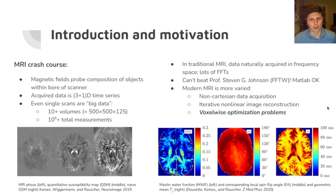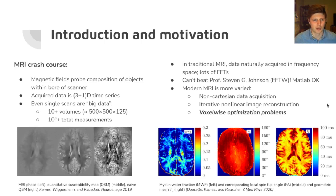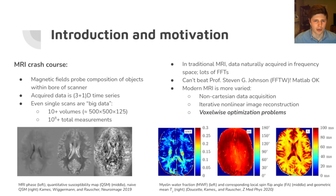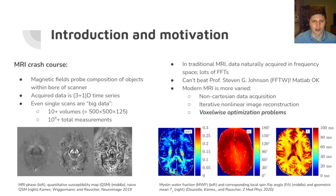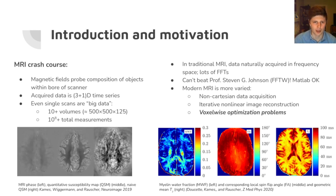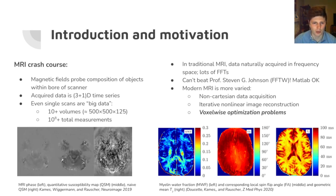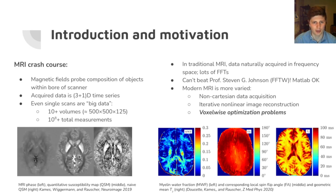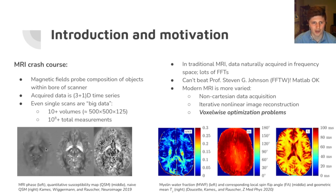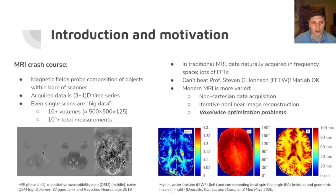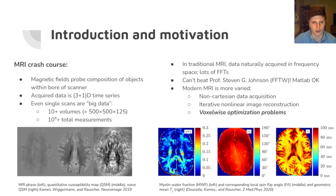Quick MRI crash course before we get started. In MRI you have magnetic fields that probe the composition of objects within the bore of the scanner. The data you get is typically a 3-plus-one-dimensional time series of complex-valued MRI signals, and even single signal scans are actually rather big — you might have 10 or more volumes of relatively high resolution, for hundreds of millions of measurements in total. On the bottom we see one sort of pipeline called quantitative susceptibility mapping, which aims to map the magnetic susceptibility at each point in the brain. On the left is the input data — this is the phase of the complex MRI signal, which is proportional to the local magnetic field.